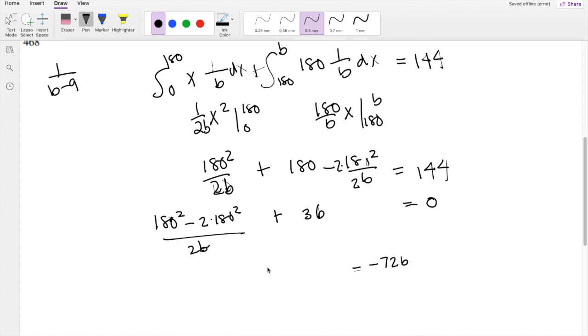is equal to 180 squared minus 2 times 180 squared. And now just divide that number, negative 32,400, divided by negative 72, which equals B, so B is equal to 450, which is our answer D.